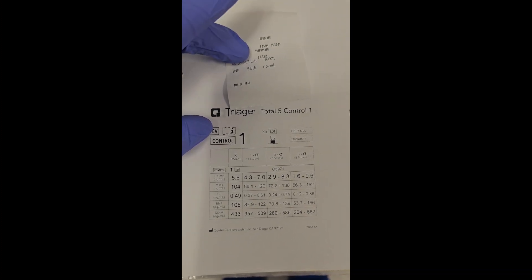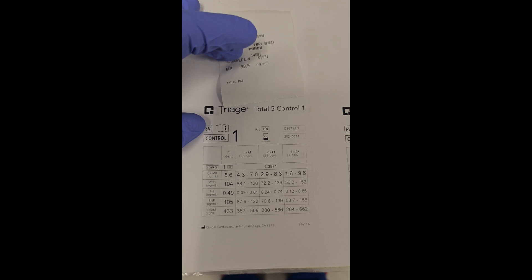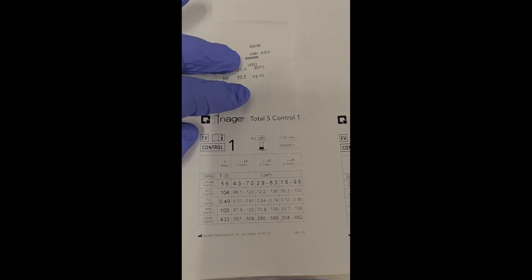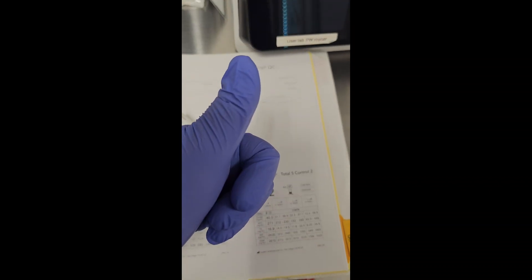BNP, two standard deviations is 70.8 to 139, so we are right in the middle. This is good to go for level one. If level two is good to go, then we are good to go.